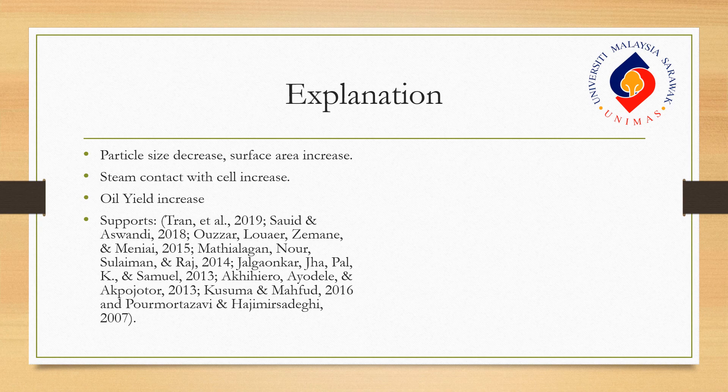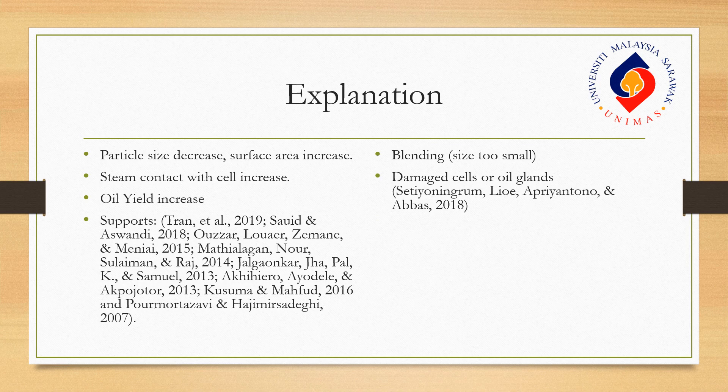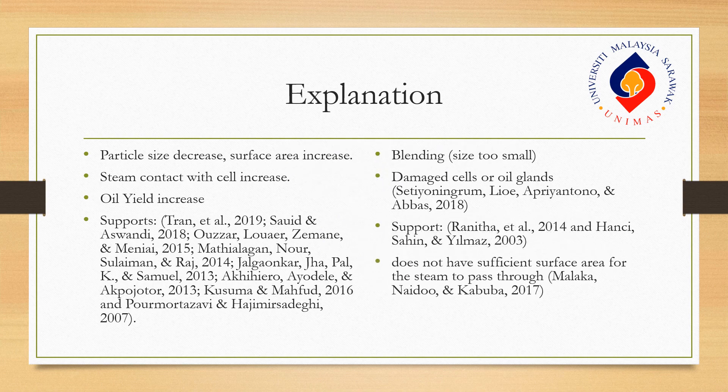However, for blending, although it produces a lower particle size, the predicted result shows it will produce a lower oil yield. This is because during the blending process, cells and oil glands are damaged, causing some volatile compounds to evaporate prematurely. This statement is supported by a few authors. In addition, the blended material does not provide sufficient surface area for the steam to pass through to evaporate the remaining volatile compounds.